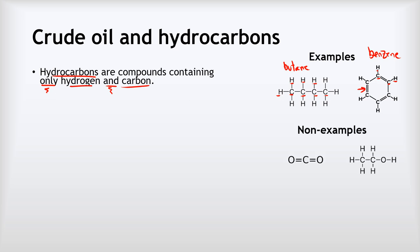Now some non-examples. On the left we've got carbon dioxide, CO2. This is not a hydrocarbon because although it's got carbon in it, it shouldn't have oxygen — the oxygen disqualifies it. If those atoms were both H's, then it would be a hydrocarbon, but they're oxygens. And on the right, although we've got hydrogen and carbon, it's also got an oxygen, and that disqualifies it from being a hydrocarbon. So to be a hydrocarbon you can only contain carbon and hydrogen, but you must have both.